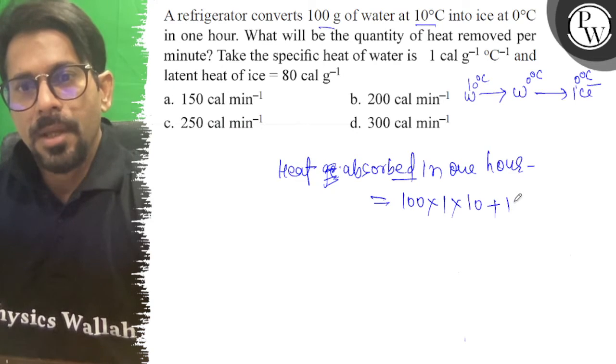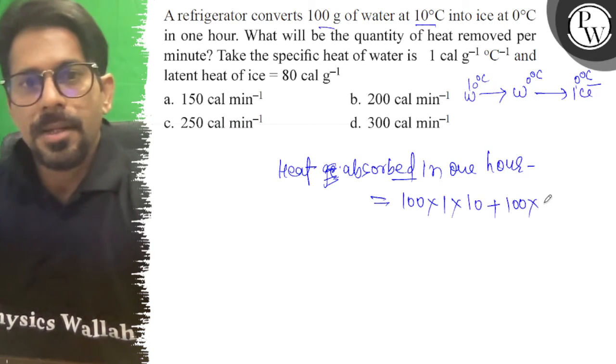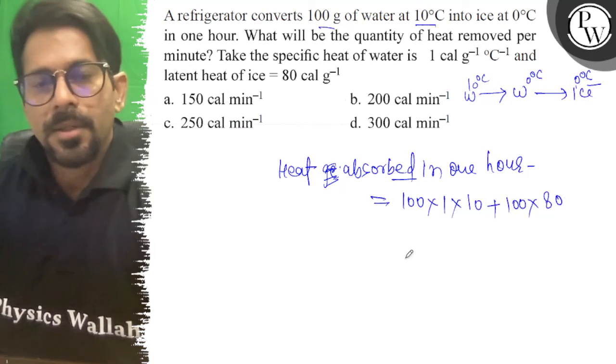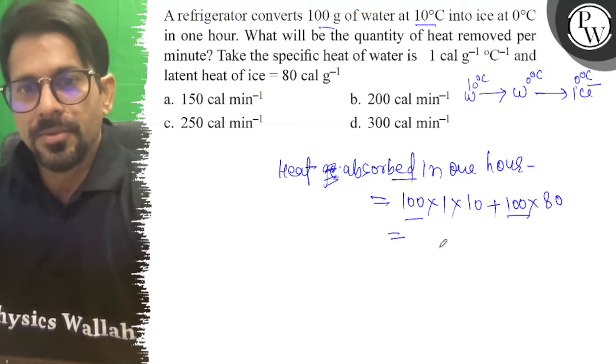Plus m into L. L is your 80. So total you have 108,000.